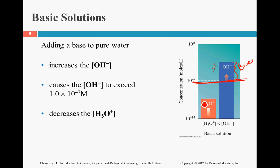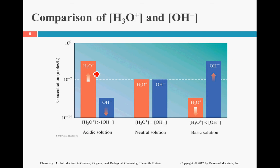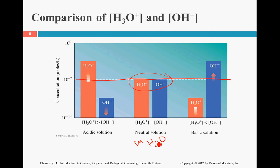Notice how when the OH minus went up, the H3O plus went down — they are inverse. Here's a visual representation: at neutral, this happens automatically in pure water. If we add an acid to the solution, the H3O plus is going to go up. If we add a base, the OH minus is going to go up. Either way, whatever doesn't go up ends up going down.